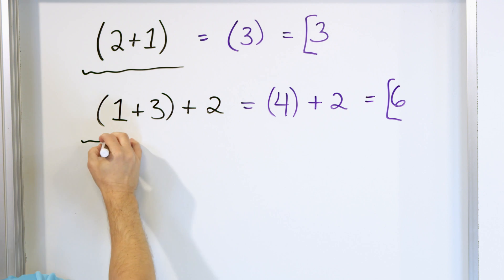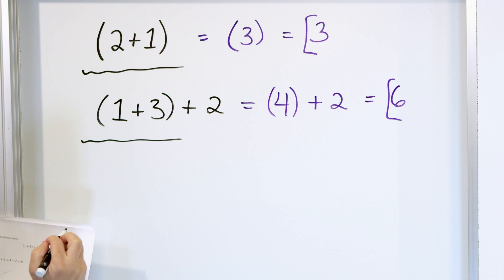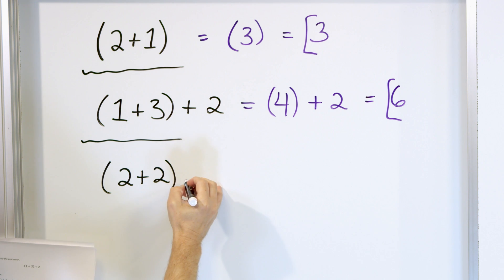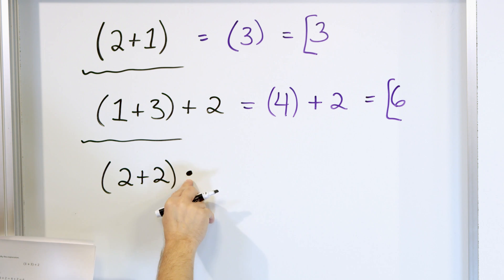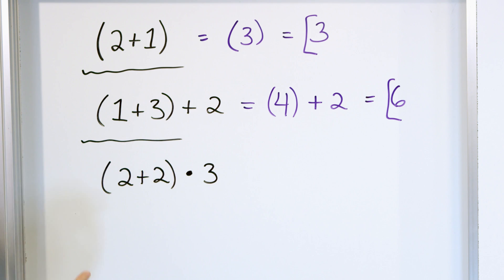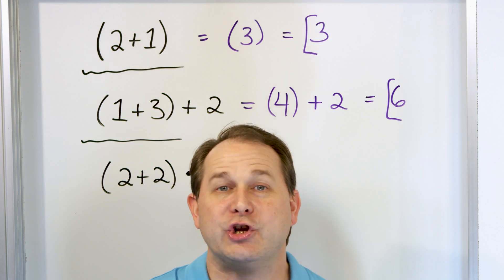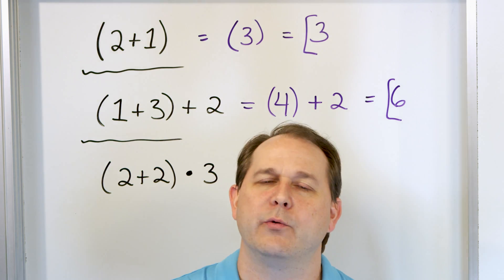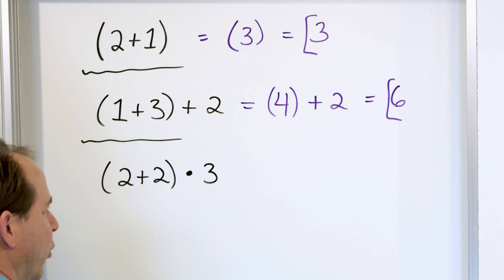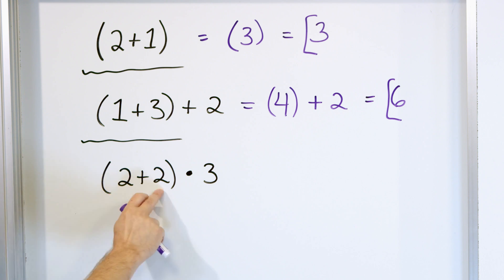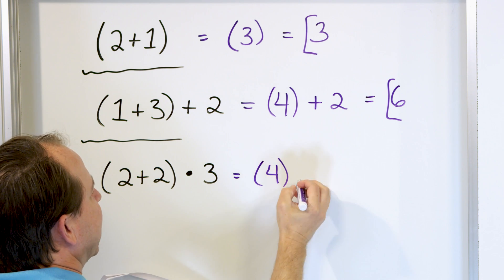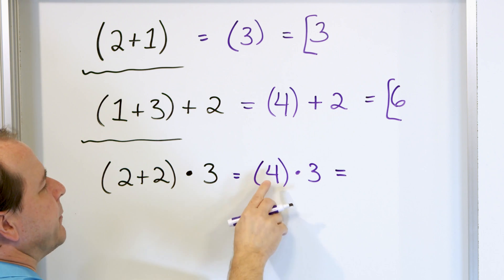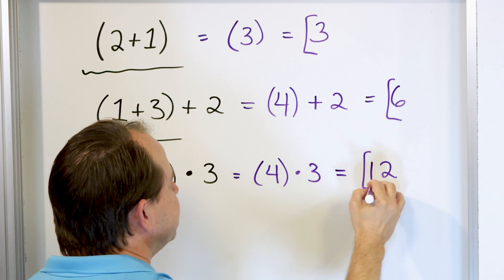Let's see more examples. Say we have parentheses two plus two, and on the outside we multiply by three — shown as a dot, since we're trying to get away from using X for multiply to avoid confusion with the variable X. Always the same thing: go inside the parentheses, do it first. Two plus two is four. We still have to multiply by three, so four times three is 12, and that is the correct answer.